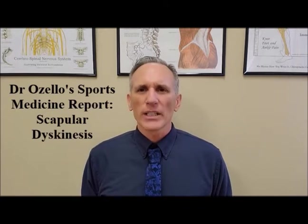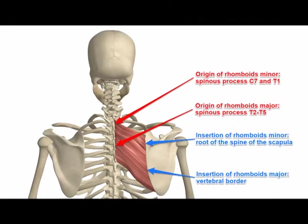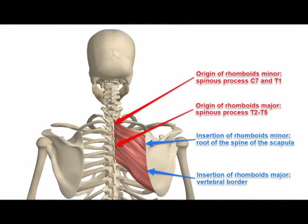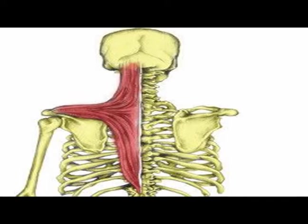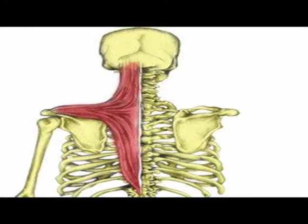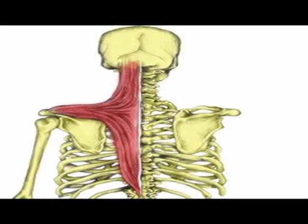There are distal and proximal causes of scapular dyskinesis. Distal means farther from the center of the body, and proximal means closer to the center of the body. The distal causes are an AC joint separation, a shoulder joint dislocation, or a labral tear. Proximal causes involve weakness in the posterior shoulder muscles — the scapular retractor muscles — the muscles that pull the scapula towards the spine. These muscles originate on the spine and attach to the medial border of the scapula.